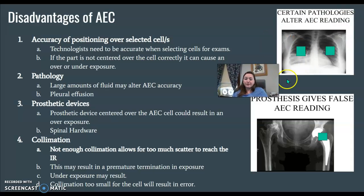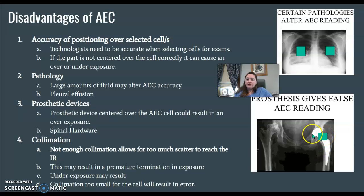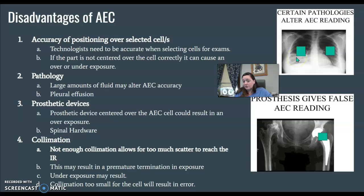Disadvantages. AEC is wonderful, but it's not a magical unicorn. You have to use it properly or set up your settings properly for it to actually help you. We already talked about accuracy of positioning of the cells, choosing the correct cell, and putting the part over the cell. Other things that could cause an error with AEC include prosthetic devices, like hip replacements or spinal hardware. If we know these are present, we need to be aware of our chamber selection or set a manual technique. It could also be pathology — large amounts of fluid, like pleural effusion, can affect AEC accuracy. If most of the lungs are filled with fluid and we're placing those cells too low into the fluid, that will change our accuracy with exposures.